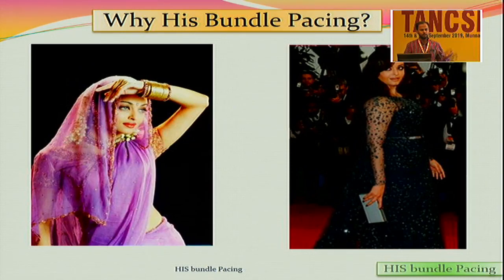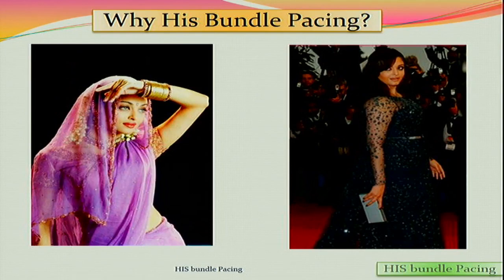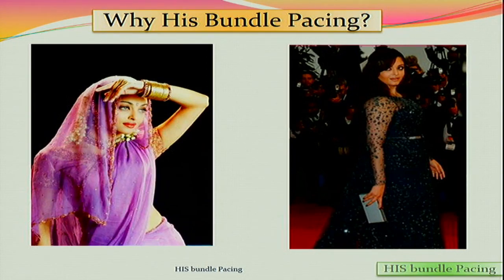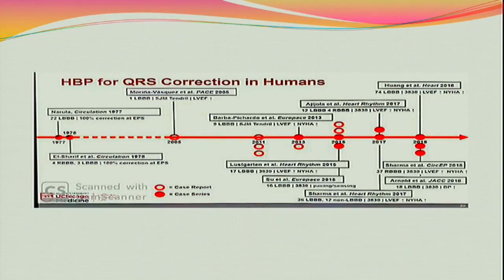Given an opportunity, if you like to choose one of these two pictures, everybody will choose the slim and narrow one — that is the concept of pacing also. Everyone would like to have a narrow QRS rather than a fat, wide QRS. We initially started pacing in the septum rather than the true RV apex to get a narrow QRS. Now we have a specific approach: directly pacing the physiological or cardiac conduction system.